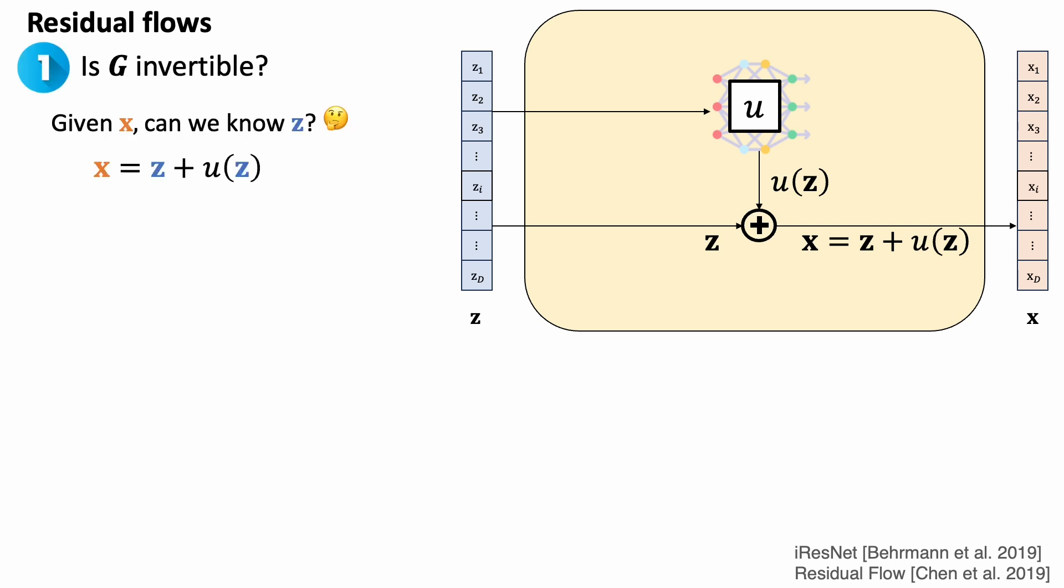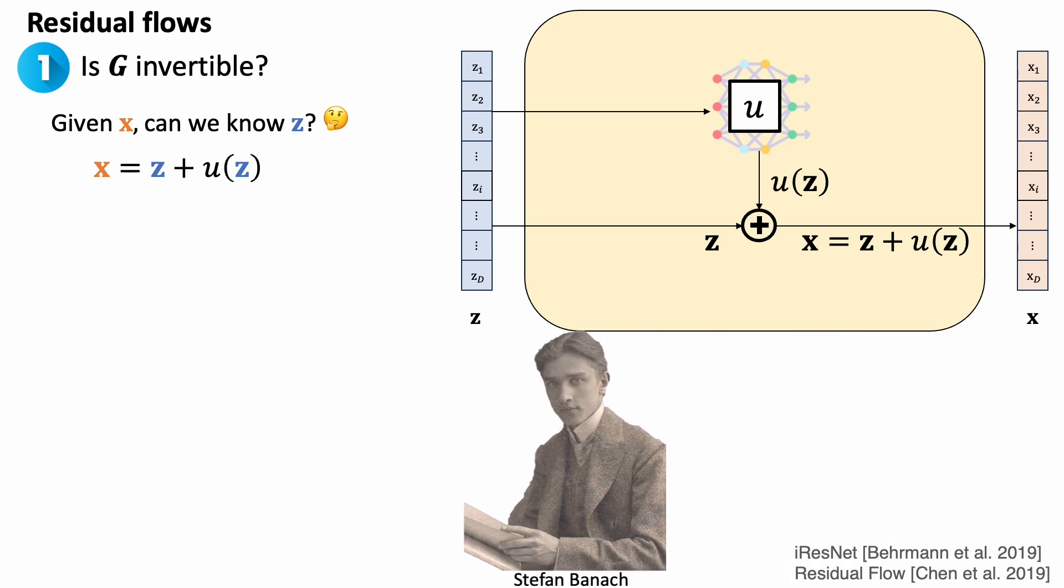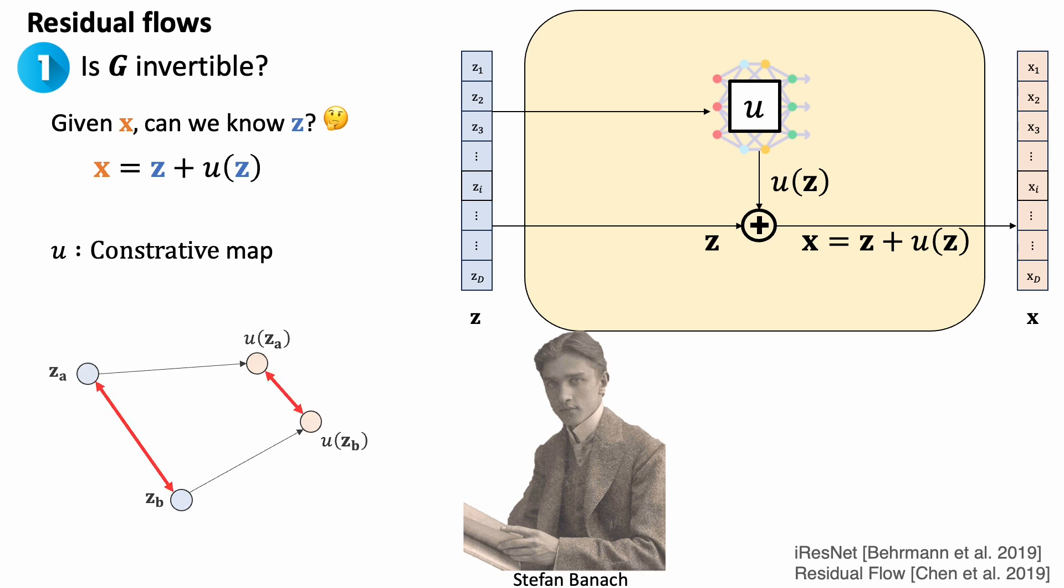First, is this invertible? Given x, can we know what the corresponding z is? In general, this is not feasible. But Stefan said it can be invertible if the function u is a contractive mapping. This means that the distance between the two points after the mapping is smaller than the distance before the mapping.